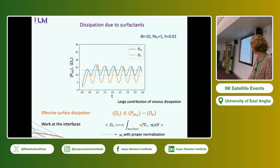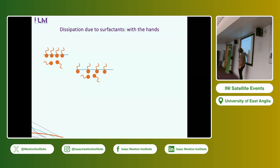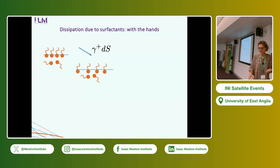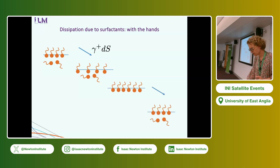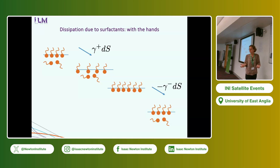The surface work can be computed either from this power difference or as the integral over all interfaces of the surface tension multiplied by the surface divergence of velocity. Physically: you stretch an interface, which has a mechanical cost γ·dS. The surface tension is high because surfactant is depleted. Later, surfactants re-adsorb, and when you return, you recover less elastic energy because now the surface tension is lower. Cycling this process produces net dissipation.